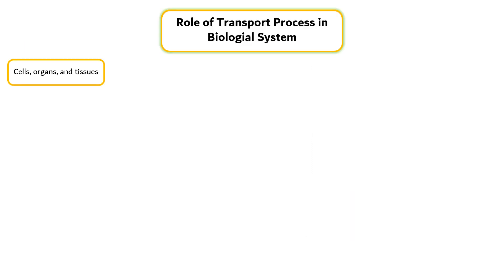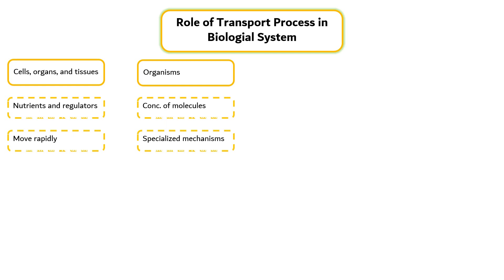In order for cells, organs and tissues to function properly, nutrients and regulators of growth and function must be able to move rapidly to and through them. Organisms control the concentrations of molecules in their tissues and organs. Consequently, specialized mechanisms have evolved for the movement of molecules across and within cells.